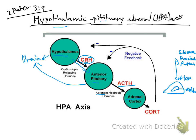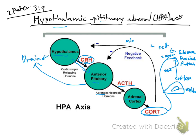The adrenal cortex releases cortisol, which comes from the zona fasciculata. To help remember which zone produces which hormone, use this: zona glomerulosa is responsible for 'salt,' zona fasciculata is responsible for 'sugar,' and zona reticularis is responsible for 'sex.' For salt, we're talking about mineralocorticoids.